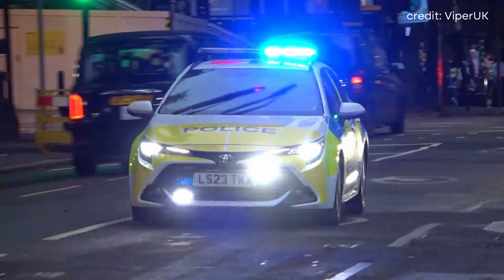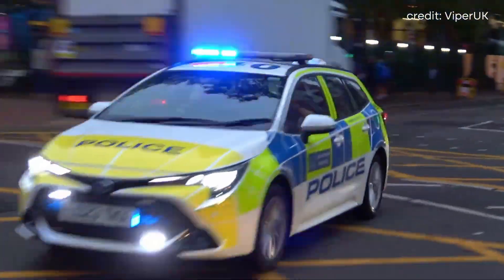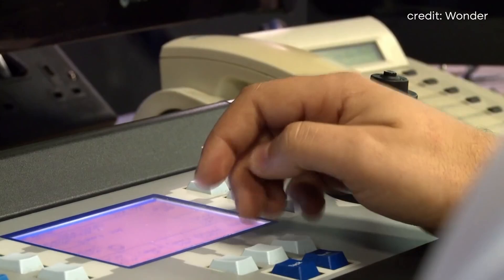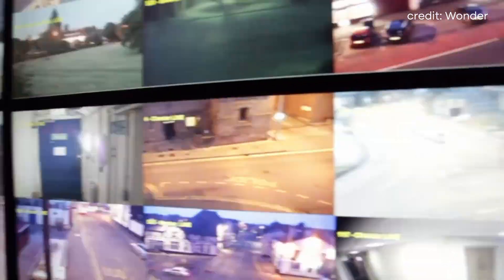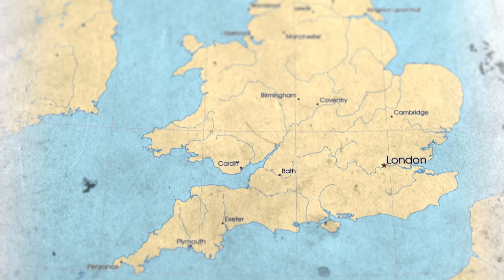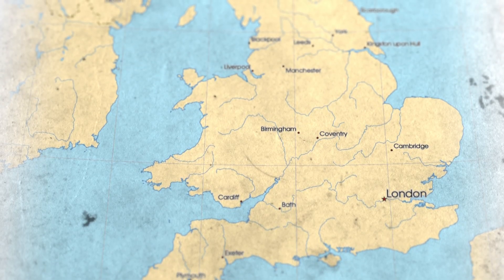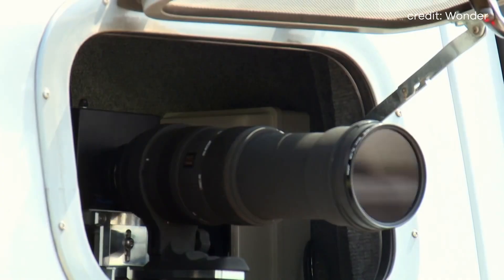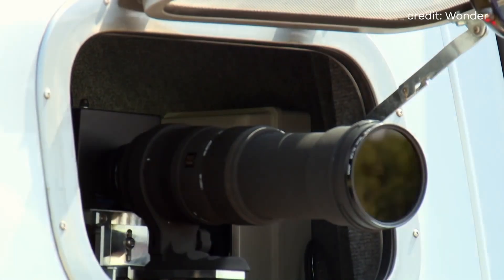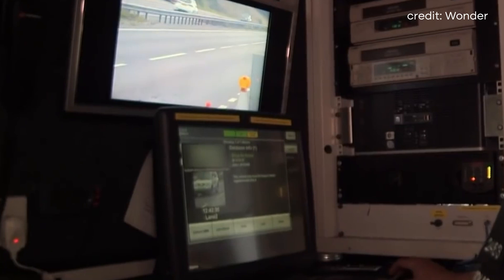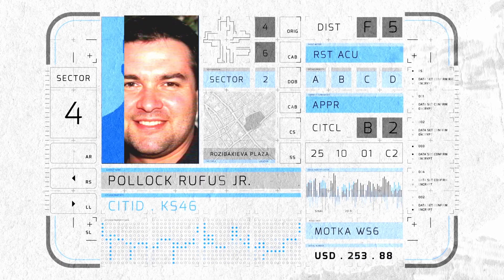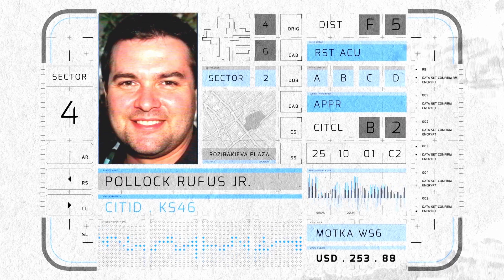In the UK, police forces are significantly ramping up their use of AI surveillance, particularly facial recognition technology. There are two primary types of facial recognition employed by the police in England and Wales. Live face recognition, or LFR, involves cameras — often mounted to police vans — that scan people's faces in real time as they walk by. These faces are then checked against a watchlist of wanted individuals.